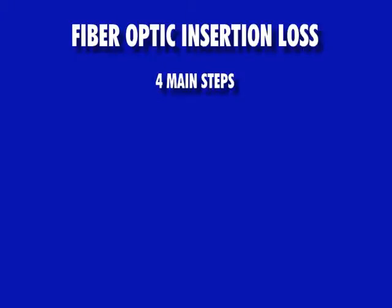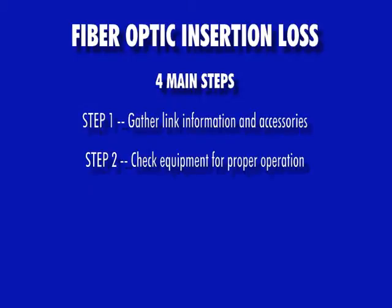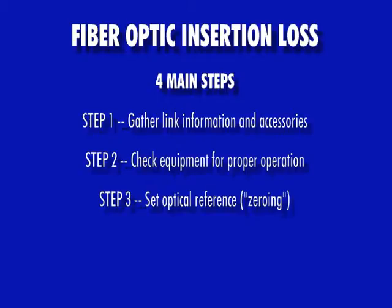There are four main steps in the process of measuring insertion loss of any fiber optic link. These steps are: gathering link information and accessories, checking the equipment and accessories for proper operation, setting an optical reference — also called zeroing — and then taking insertion loss measurements.